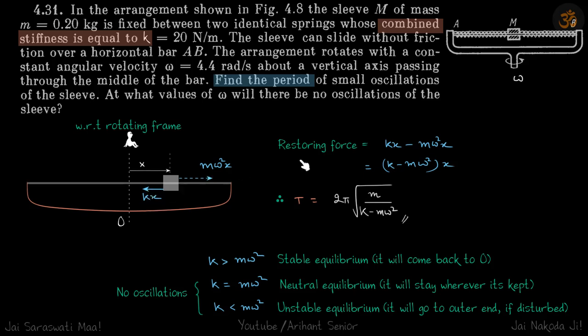So the net restoring force is kx minus mω²x, which is (k - mω²) times x. The time period will be 2π√(m/(k - mω²)).